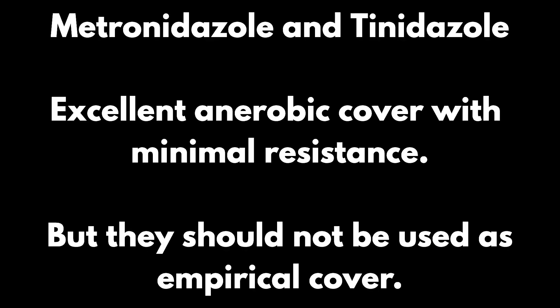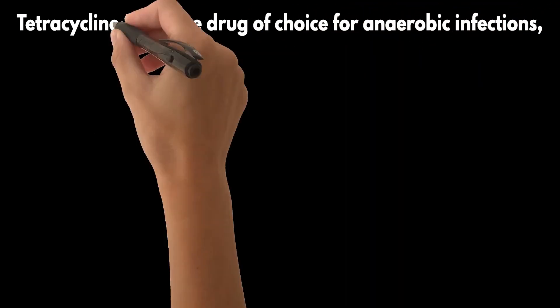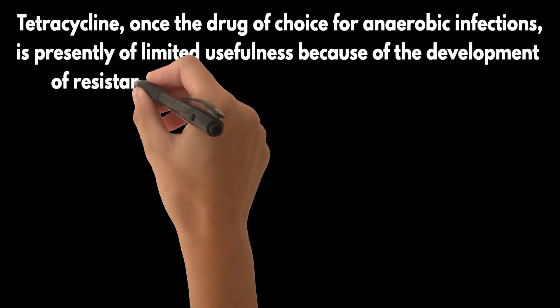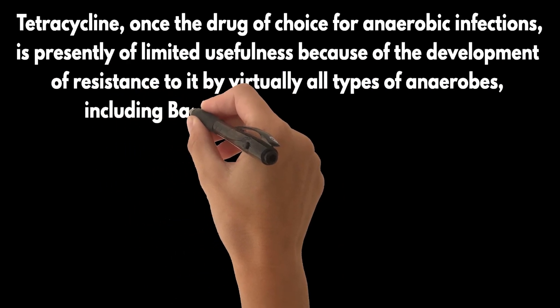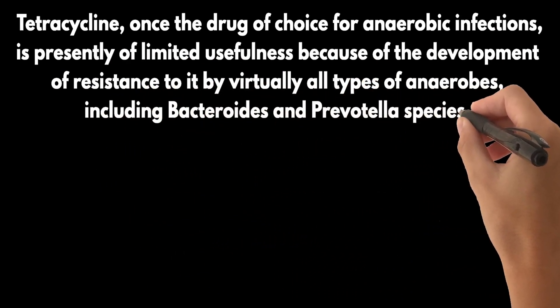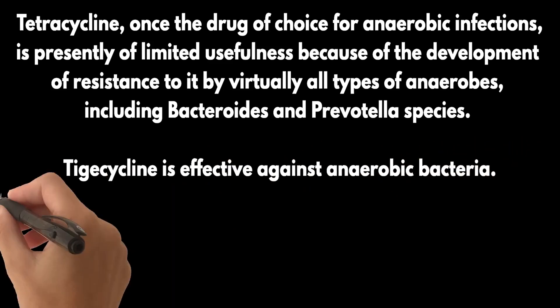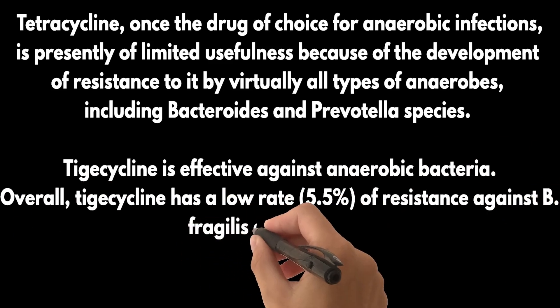Metronidazole and tinidazole have excellent anaerobic cover with minimal resistance, but they should not be used as empirical cover. Tetracycline, once the drug of choice for anaerobic infections, is presently of limited usefulness because of resistance development by virtually all types of anaerobes, including Bacteroides and Prevotella species. Tigecycline is effective against anaerobic bacteria; overall, tigecycline has a low resistance rate of 5.5% against B. fragilis group species.